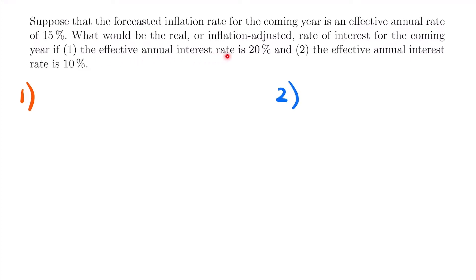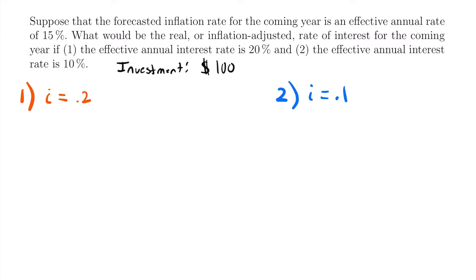For part one, the effective annual interest rate is 20%, so i = 0.2. For part two, the interest rate is 10%, so i = 0.1. To understand how we calculate the real rate of interest, let's consider that for both scenarios we have an investment today of $100, and in one year we want to purchase an item that currently costs $100. We want to see if we can still afford that item one year from today.